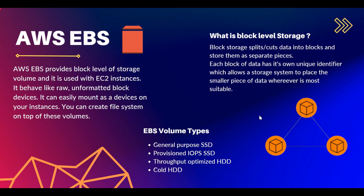There are various types of EBS volumes. When you create an EC2 instance and add a volume, you can choose between General Purpose SSD, Provisioned IOPS SSD, Throughput Optimized HDD, or Cold HDD. Based on your requirement you can select the exact volume type you need.